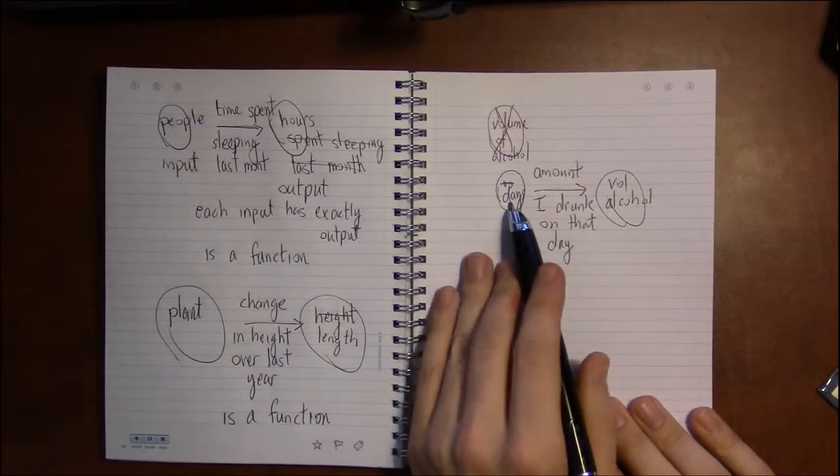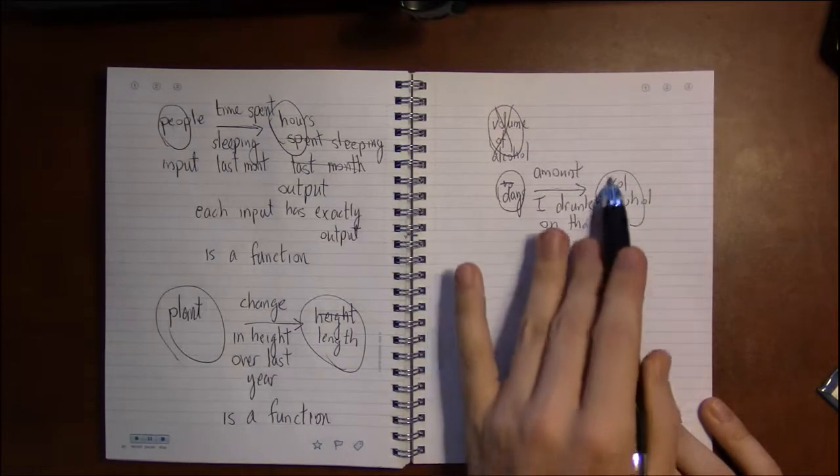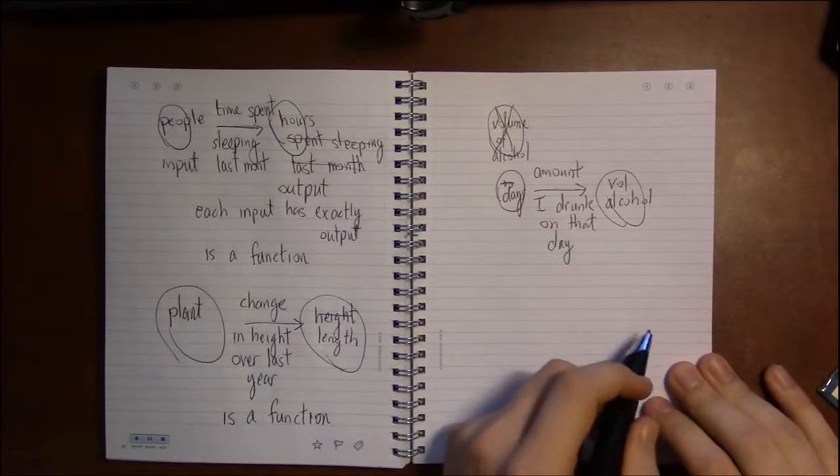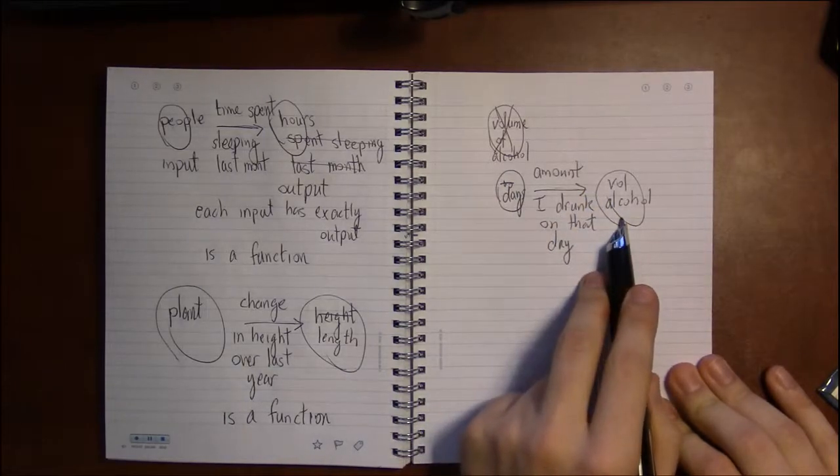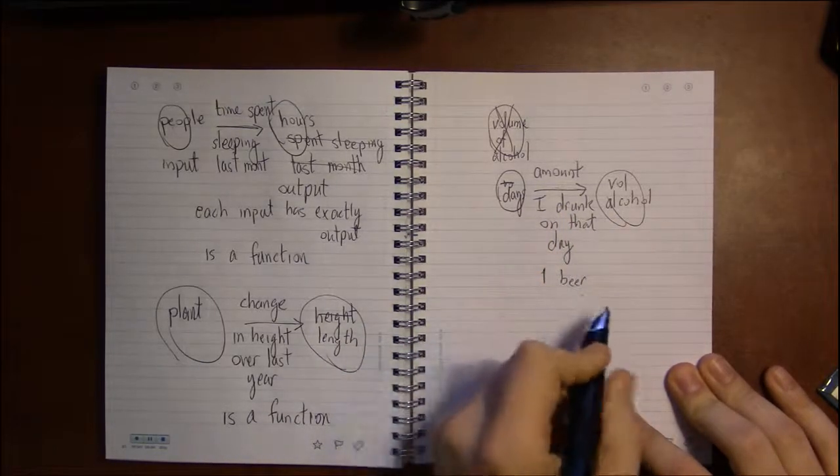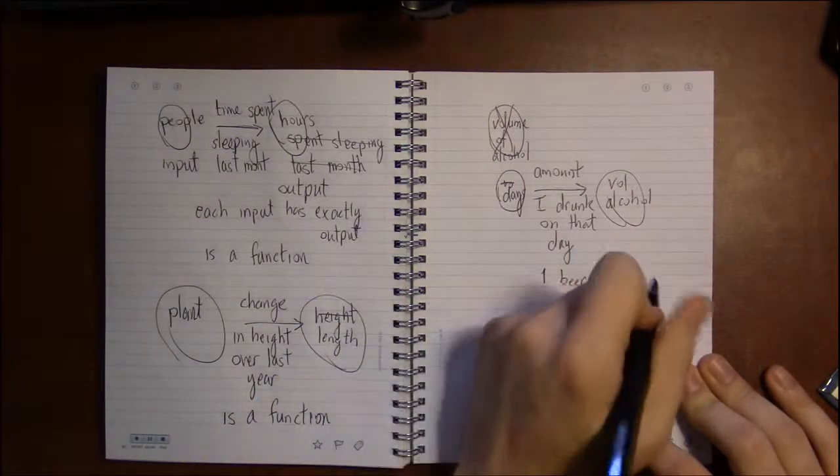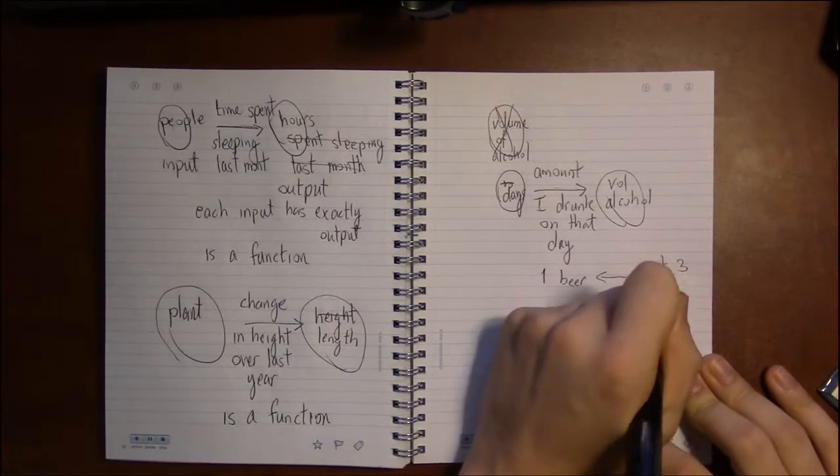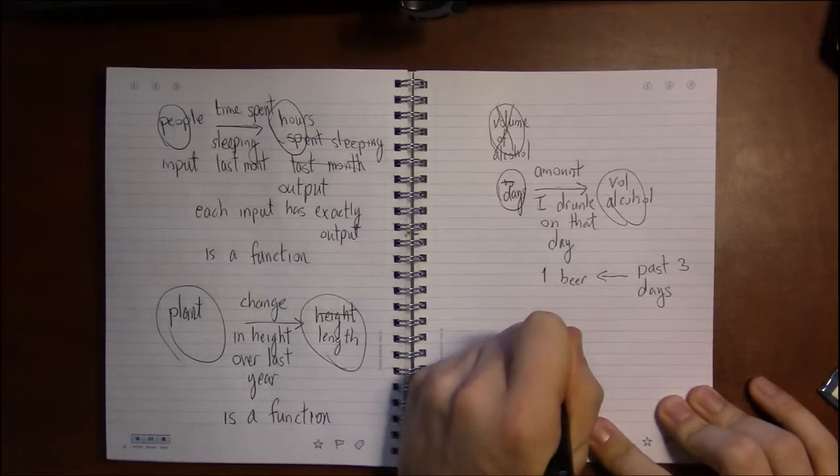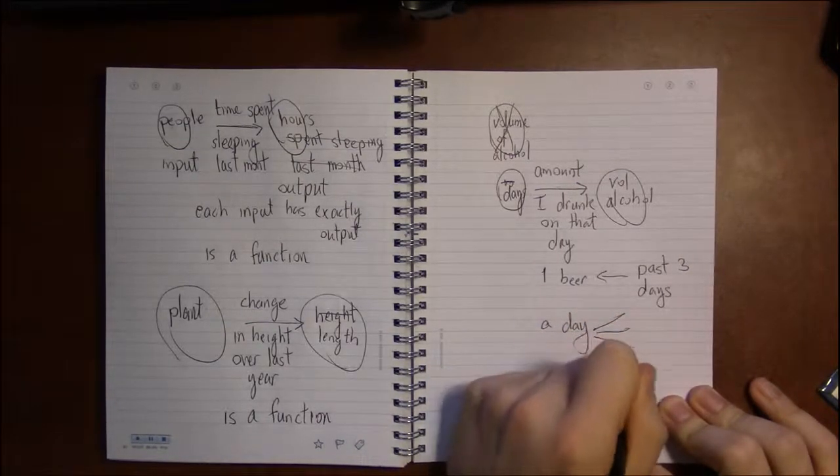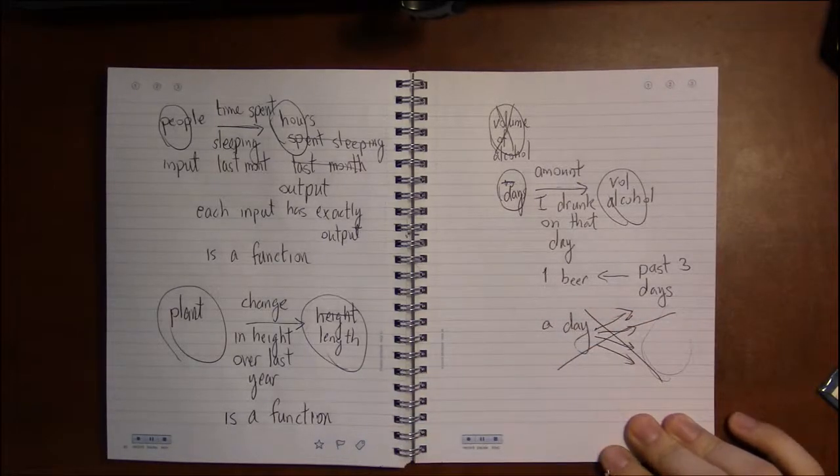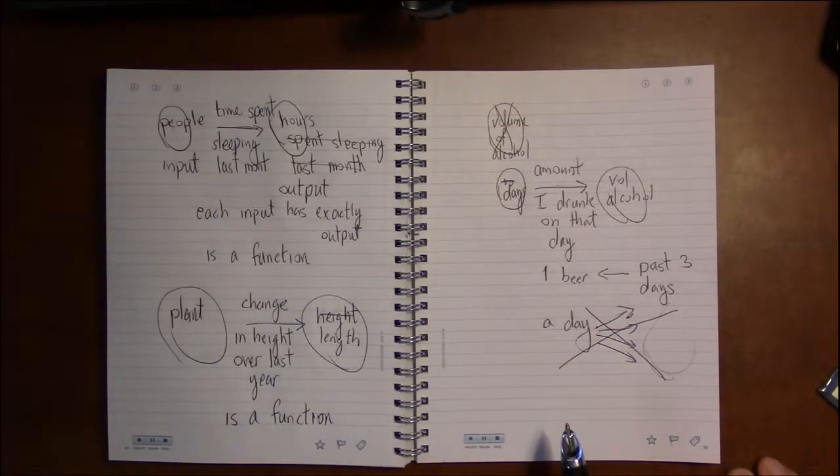But there's nothing in the definition of function that restricts me from having an output associated with multiple inputs. In other words, it's okay if I drink one can of beer or a bottle of beer on multiple days. So the output of one beer is associated with, let's say, the past three days. That's okay. That's perfectly fine. The only thing we can't have is a particular day associated with multiple quantities of alcohol drunk. That would disqualify this from being a function. But since that isn't the case, this is in fact a function.